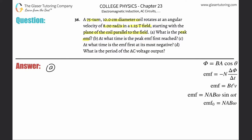The peak EMF — or peak voltage, same thing — equals the number of turns of the coil multiplied by the area of the loop experiencing the external magnetic field, multiplied by the strength of the magnetic field, multiplied by the angular velocity of the coil. So we just plug and chug: 75 turns, diameter is given.